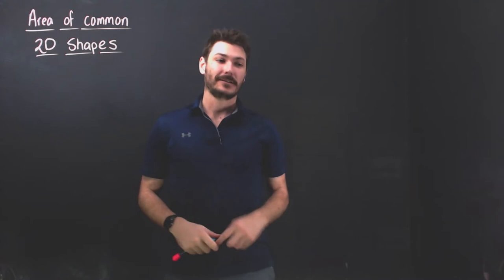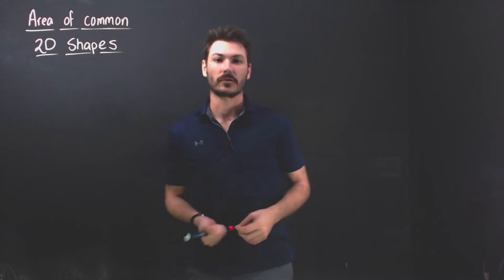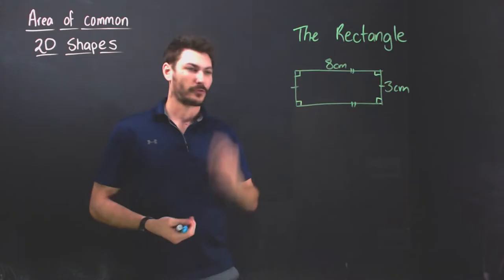In this video we're going to be looking at the area of common 2D shapes and how to find it. It's going to be a rapid-fire video where I just do a worked example for each individual type of shape. If you need to re-watch the video you can of course do that, so without further ado.